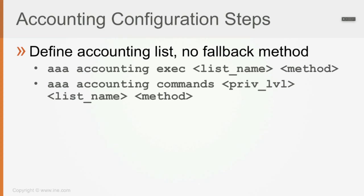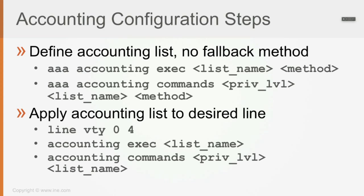For accounting, there is no fallback method — you can only do remote accounting. You can account for either exec-level access or commands of specific privilege levels. The command format is 'aaa accounting exec' or 'aaa accounting commands' with the privilege level, and records are sent to TACACS. If you have used a non-default named list, you have to apply the accounting list to the desired VTY lines so that commands typed on those lines are accounted for via TACACS.